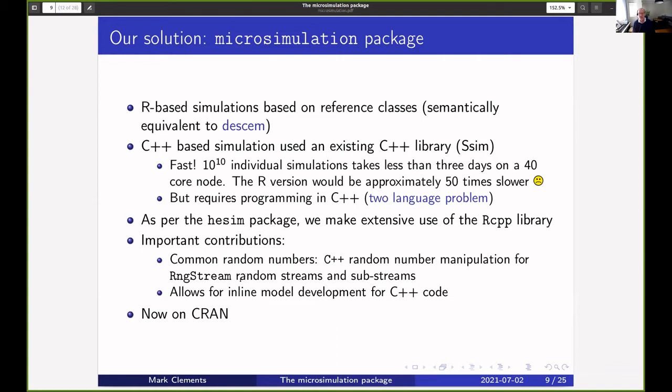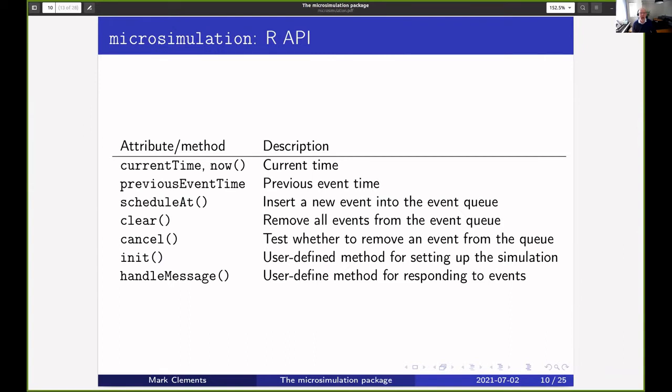The R API: we've got a currentTime attribute or now() method, they're equivalent. We've got a previousEventTime attribute. We've got scheduleAt for scheduling new events. We've got a clear method which removes all events. We've got a cancel method to test for removing an event. Then we've got init which the user needs to define to set things up, and handleMessage which is how to respond to each of the events. There's also final for what to return at the end. This probably makes a lot more sense if you see an example.